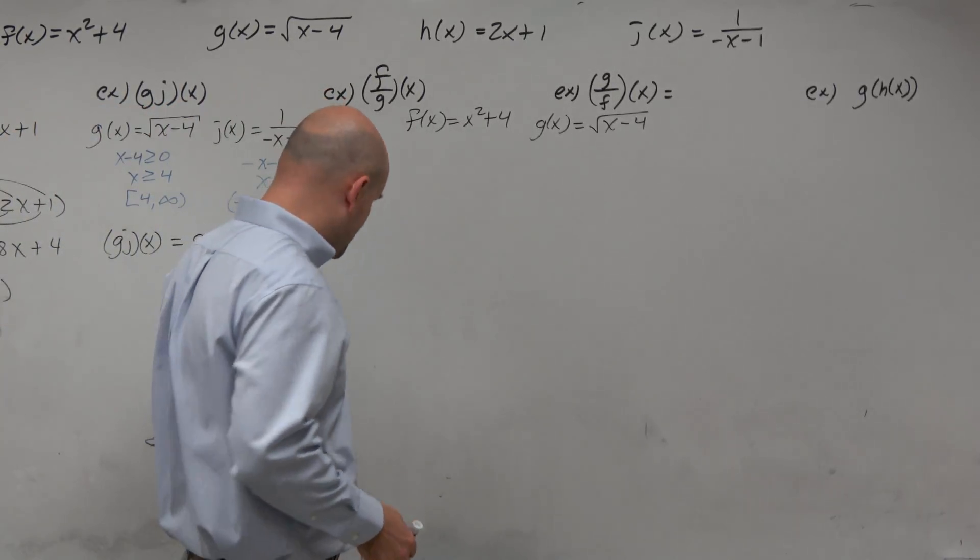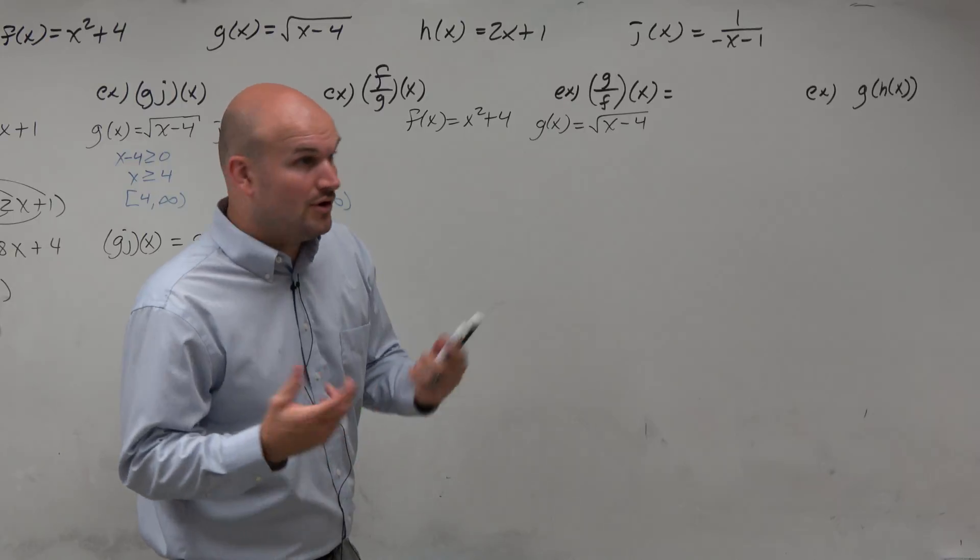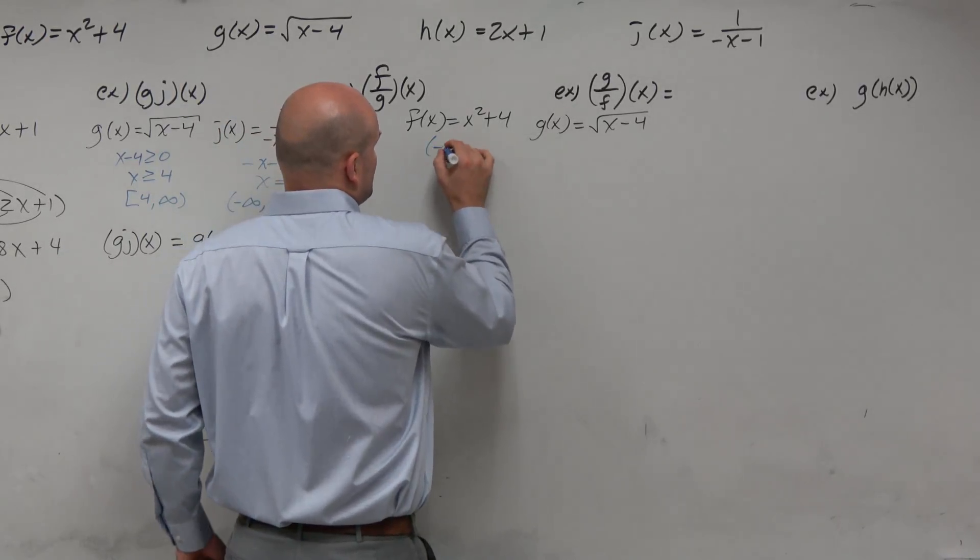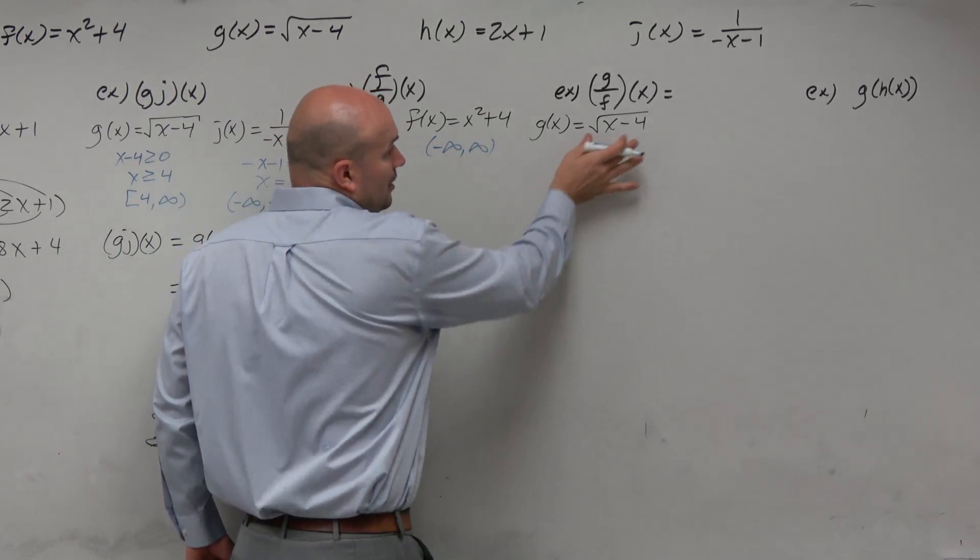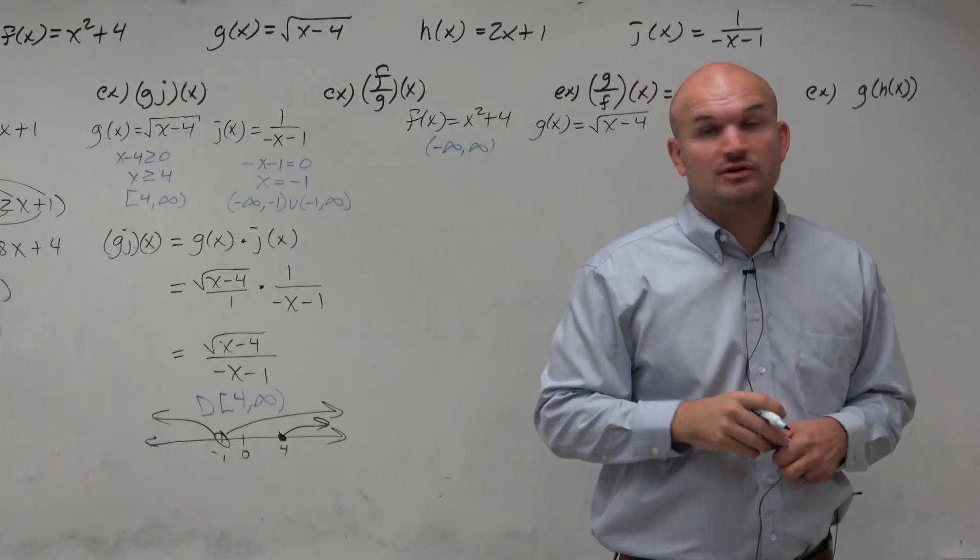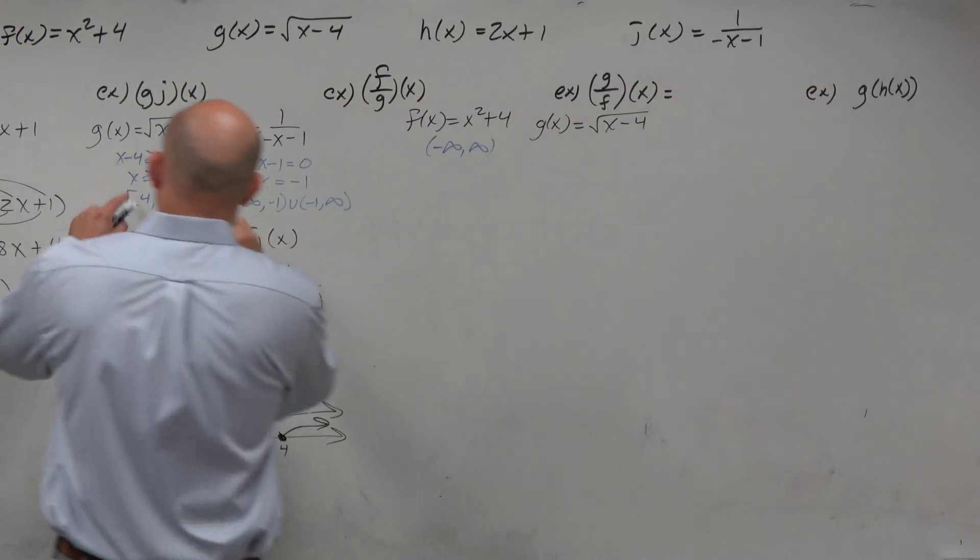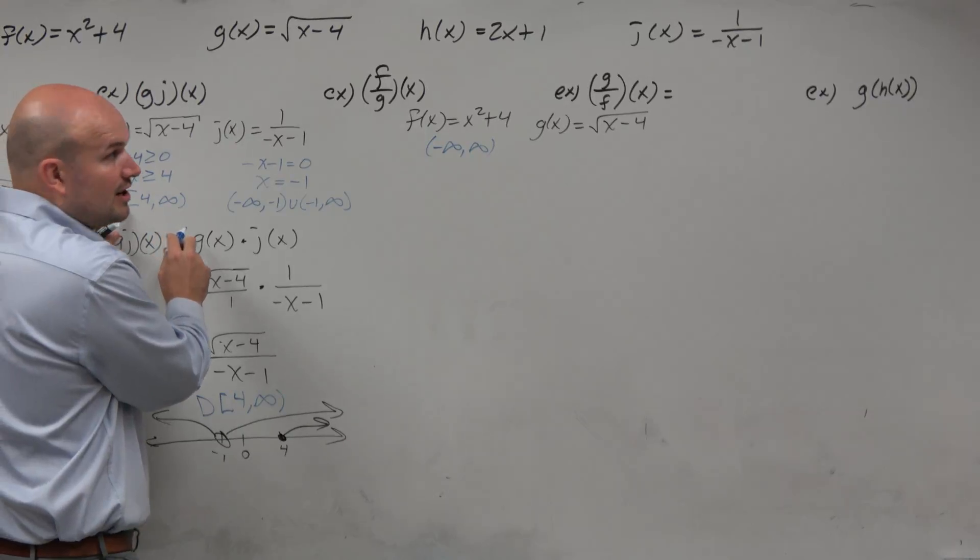Domain of x squared plus 4. Don't need to worry about that. That's all real numbers. x minus 4. So remember, did we do that one? Yes, we did. We already figured that one out is 4 to infinity, right?